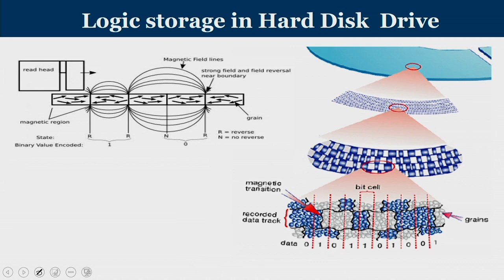If you zoom into each track on a platter's surface, you can see the magnetic material. Wherever there is no variation in magnetic polarity, that is 0; wherever there is a variation — a reversal — that is 1. So no reversal represents 0, and a reversal in magnetic polarity represents 1.